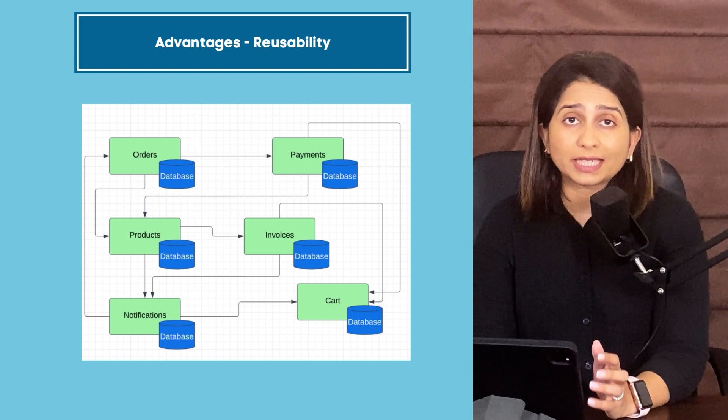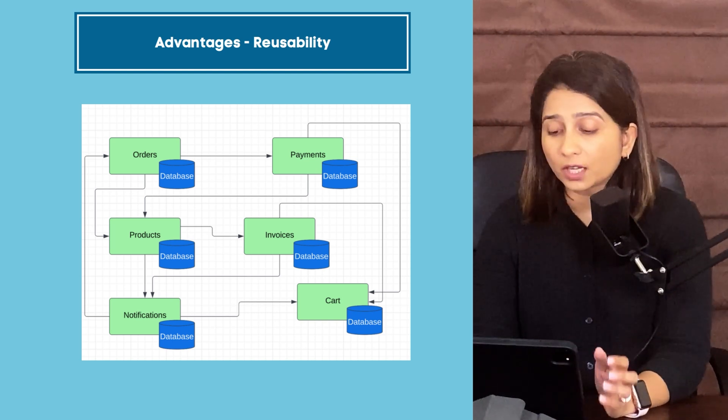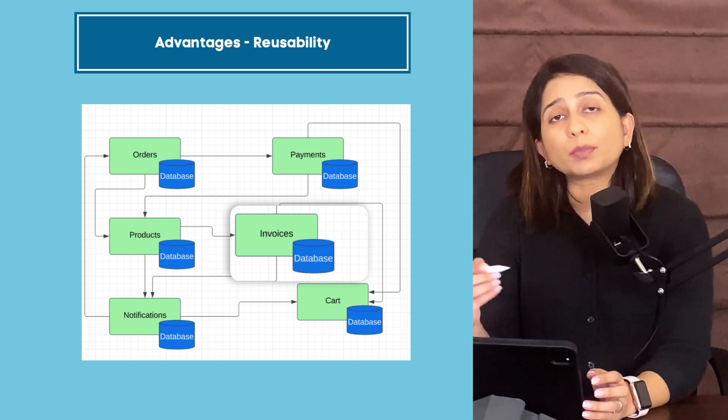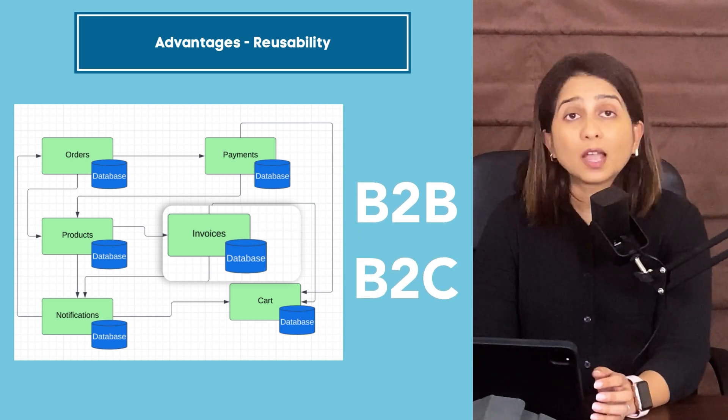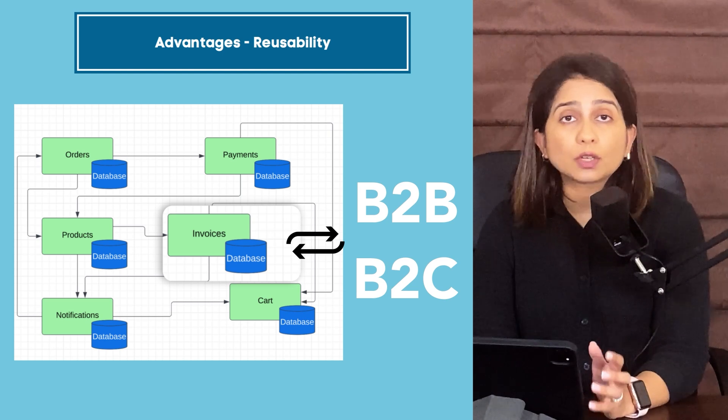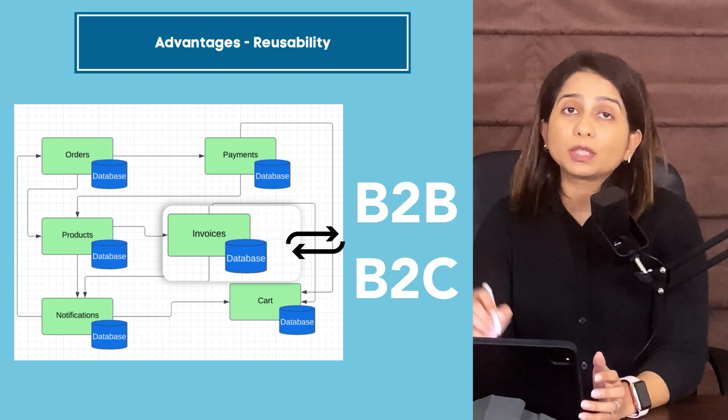Another advantage is reusability. If you have built an invoices service, it can be reused in a new use case — for example, if the company moves from a B2B to a B2C model, the invoices component can serve both streams. In large companies, one microservice or a set of services is often used across the whole organization, such as a config management service utilized regardless of business unit or use case.